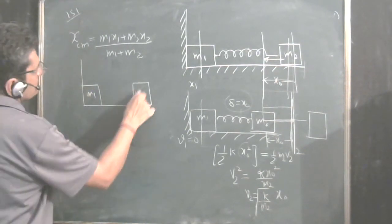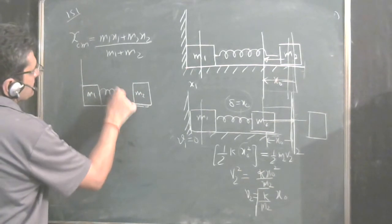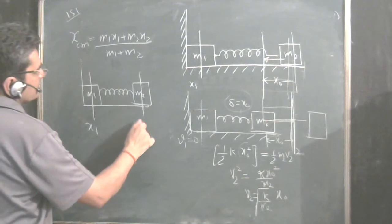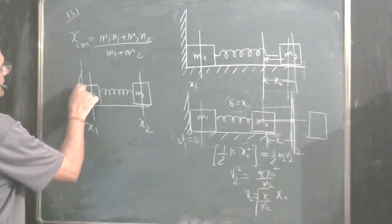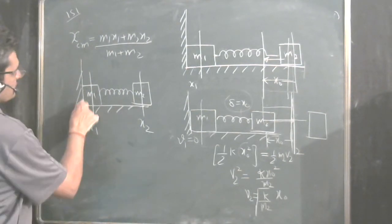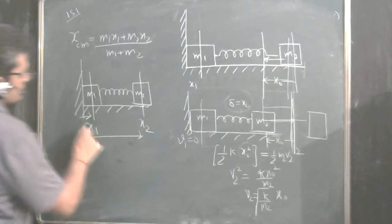M1, this is M2. They may be connected by string or whatever. If this is location of M1, this is location of x2 at any point of time. This is x1 from a reference point. This is x2.